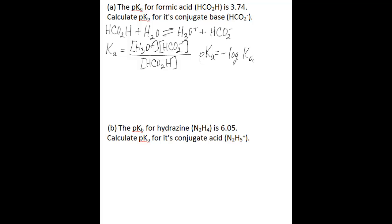This problem is asking you to find the pKb value for the reverse of this reaction, where the conjugate base of formic acid, the HCO2-, accepts a proton from the hydronium ion. So the products become the reactants, and the reactants become the products.